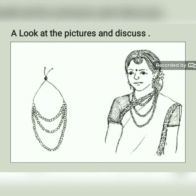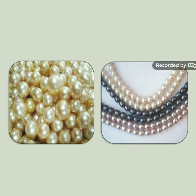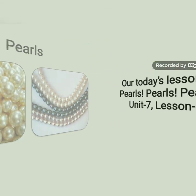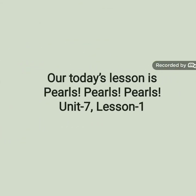At first, look at the picture. What do you see in this picture? Yes, there is a woman wearing a special kind of necklace. Can you say what the necklace is made of? It is made of pearls. Pearls means mukta. And our today's lesson is Pearls, Pearls, Pearls — Unit 7, Lesson 1.